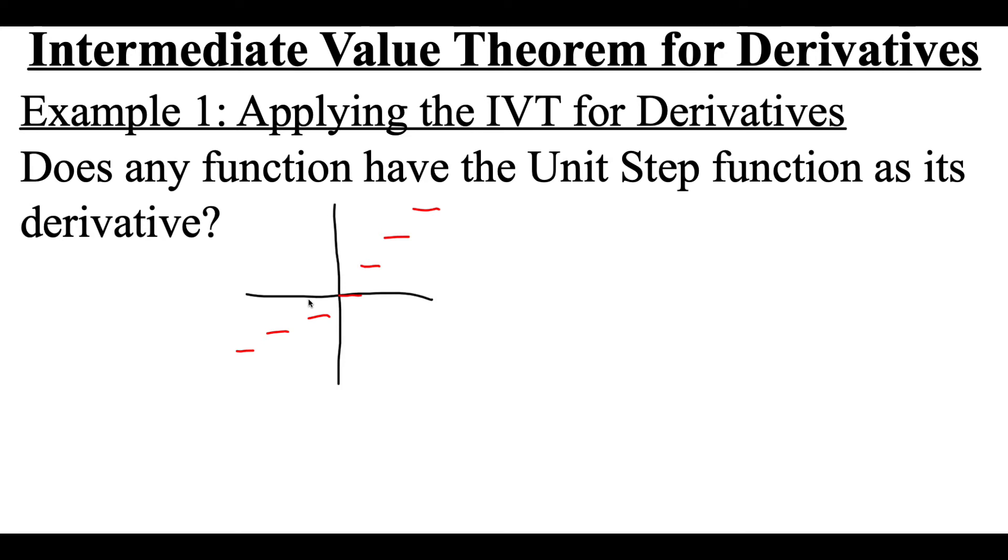If we were to pick some a value, say over here, we picked an a value of negative 0.5. Based on the unit step function, that would get rounded down to negative one. So f of negative 0.5 rounds down to negative one.